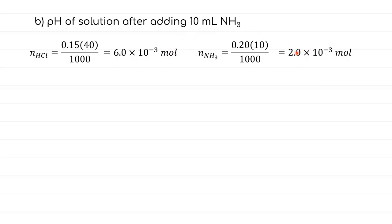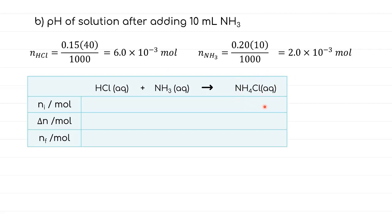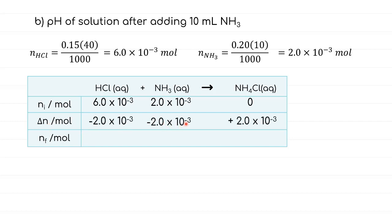One reactant will be completely used up and the other will have excess. The reaction between HCl and NH₃ forms the salt NH₄Cl. Using an ICE table: HCl starts at 6.0 × 10⁻³ mol, NH₃ at 2.0 × 10⁻³ mol, and NH₄Cl at 0. NH₃ is the limiting reactant because it has the smaller amount, so Δn = −2.0 × 10⁻³ for both reactants and +2.0 × 10⁻³ for the product. The final moles are: HCl = 4.0 × 10⁻³ mol, NH₃ = 0, NH₄Cl = 2.0 × 10⁻³ mol.